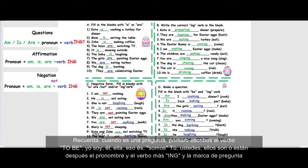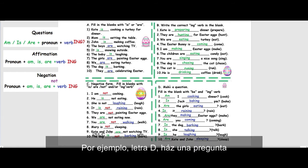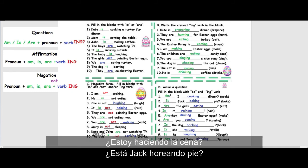The verb plus ing at the end and the question mark. For example, letter D, make a question. Am I cooking dinner? Is Jack baking pie?